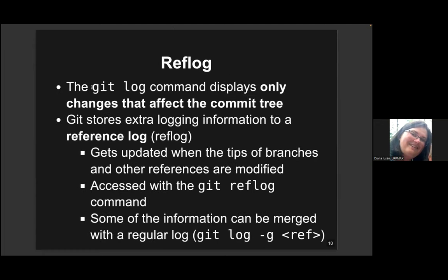Git log displays only changes that have affected the commit tree. But if you remove a commit from your history, you will not be able to find it with git log anymore — unless you use what is called the reflog. Git reflog stores all the extra logging information: all the commands that change the HEAD reference are stored there. The command to access it is git reflog. You may also use git log -g ref to merge the information from git log with that from the reflog.